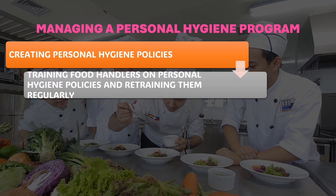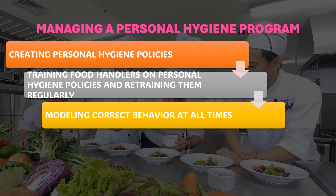Next, we have to train staff or food handlers on personal hygiene. They must be aware of the pros and cons of maintaining themselves because they are the ones preparing the food and drinks served to guests and customers. Next is modeling correct behavior at all times. If you are the manager or superior, in order for your subordinates to follow hygiene policies, you yourself must set the standard and follow the correct procedures.